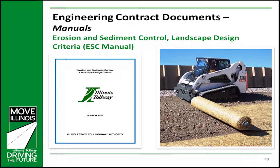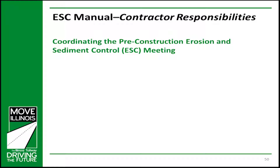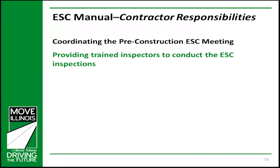The Erosion and Sediment Control Landscape Design Criteria manual, referred to as the ESC Manual, provides the criteria, guidance, and general policies and procedures that need to be followed for implementation of erosion and sediment control and landscape measures for any construction on the tollway. This includes NPDES Permit Section 402 and Section 404 Permits of the Clean Water Act issued by the U.S. Army Corps of Engineers, as well as Illinois Environmental Protection Agency (IEPA) related permits. The contractor is responsible for managing the construction site in compliance with the requirements of the tollway permits. The contractor's erosion and sediment control manager must be certified, and the construction manager's manual provides resources where the manager can obtain the necessary training and certification.